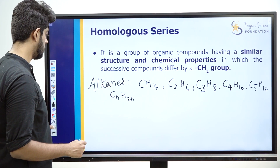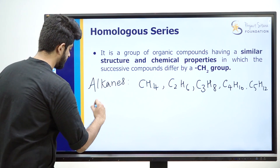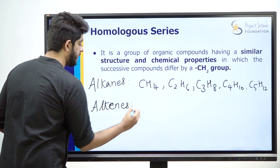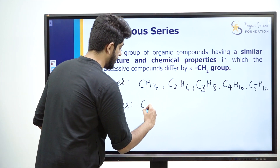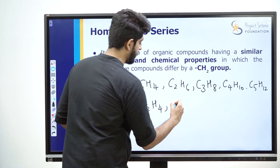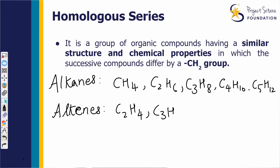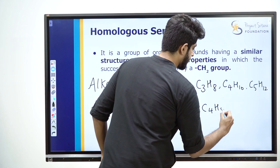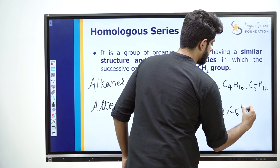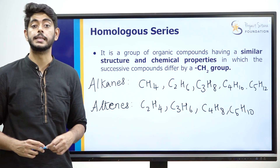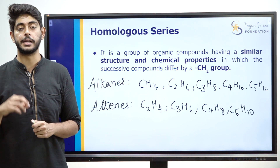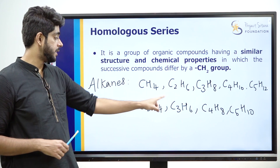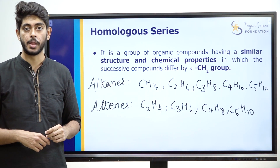Next, the homologous series of alkenes. The alkenes we know: ethene C2H4, propene C3H6, butene C4H8, pentene C5H10. The general formula for alkenes is CnH2n. Observe — between each member there is a CH2 difference.